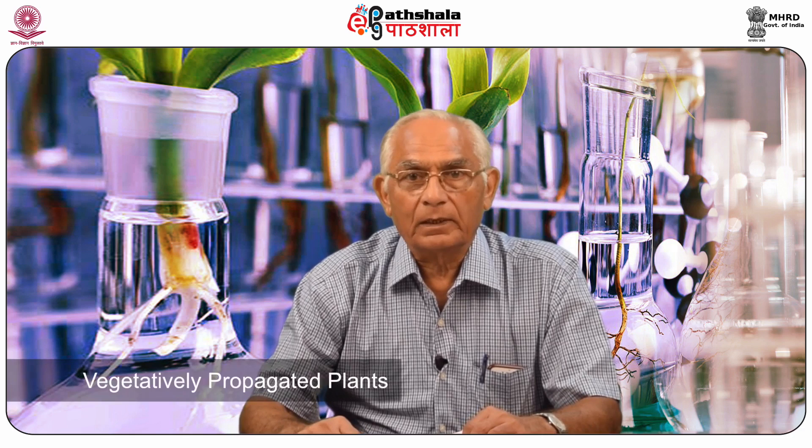Plants are attacked by a variety of phytopathogens which cause damage to the host and result in considerable economic losses. Vegetatively propagated plants like potato, sugarcane, engrafted fruit trees, and ornamentals are more prone to damage by the pathogen because they accumulate over the generations. When a generation passes through seed, these pathogens are removed, but in vegetatively propagated plants, the pathogen moves from generation to generation.